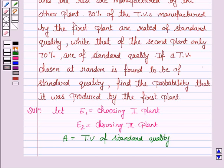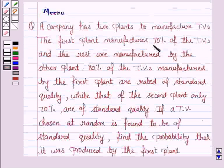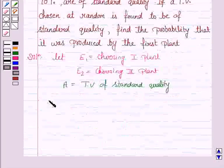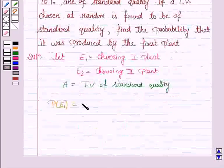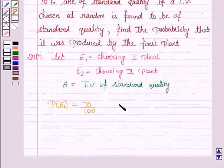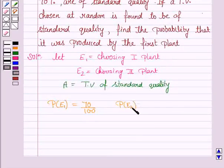We are given that 70% of the TVs are manufactured by the first plant, so the probability of choosing the first plant is 70% — that is 70/100. The rest of the TVs are manufactured by the other plant, so the probability of choosing the second plant is 30% — that is 30/100.